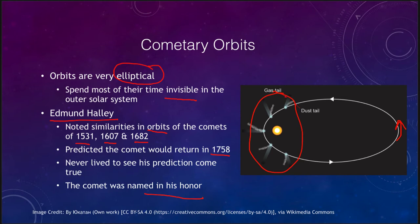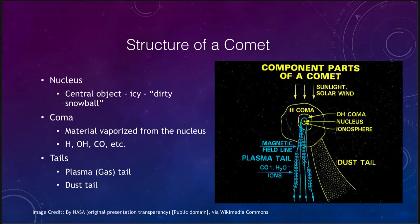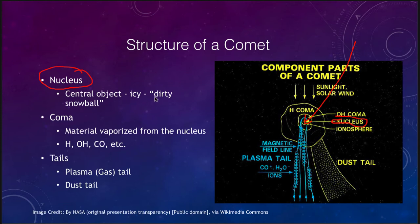So comets have very elliptical orbits and they orbit continuously like a planet. The pieces of the comet include the nucleus — the actual solid piece of the comet, this little tiny dot. That is sometimes called a dirty snowball, because it is primarily made of ices, which would be the snowy part, and dirty carbon compounds that make up the remainder of it.